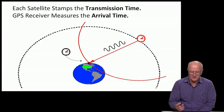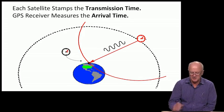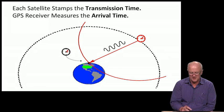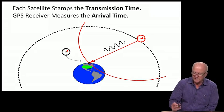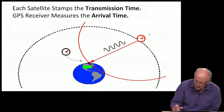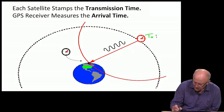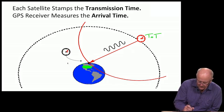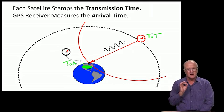Here's another picture of the same thing. The satellite stamps the transmission time, the receiver measures the arrival time. Call this time of transmission and this time of arrival.